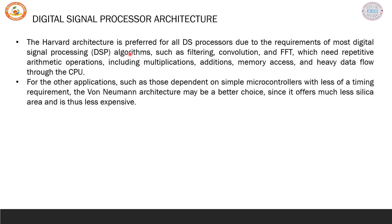The Harvard architecture is preferred for most digital signal processors because DSP algorithms such as filtering, convolution, and FFT require repetitive arithmetic operations — mostly multiplications, additions, memory access, and processing of large amounts of data. For simple applications that do not depend on such complicated architecture, you may go with a simple microcontroller. If your timing requirement is not very rigid, then von Neumann may serve the purpose — it is simpler, costs less, and can solve problems for very simple applications.